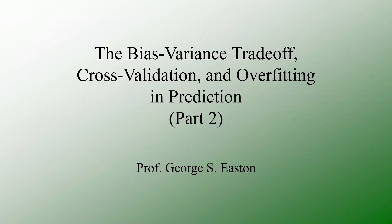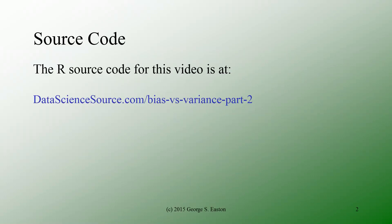This is Professor George Easton and this is part two of my discussion of the bias-variance trade-off, basic cross-validation and overfitting in the context of prediction. In this video we're going to look at actual examples which will show how overfitting occurs and how cross-validation can be used to prevent it. The demonstration is going to be done using R and RStudio.